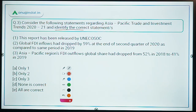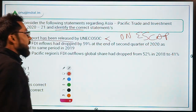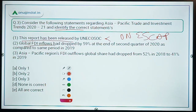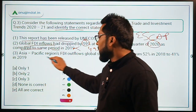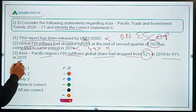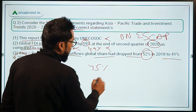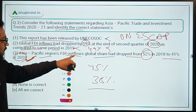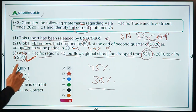Evaluating the statements: Statement 1 says this report was released by UN ECOSOC — incorrect, it was released by UN ESCAP. Statement 2 says global FDI inflows dropped by 59% — incorrect, it was 49%. Statement 3 says Asia-Pacific FDI outflows global share dropped from 52% in 2018 to 41% in 2019 — this is absolutely correct. Therefore, only statement three is correct and option C is the answer.